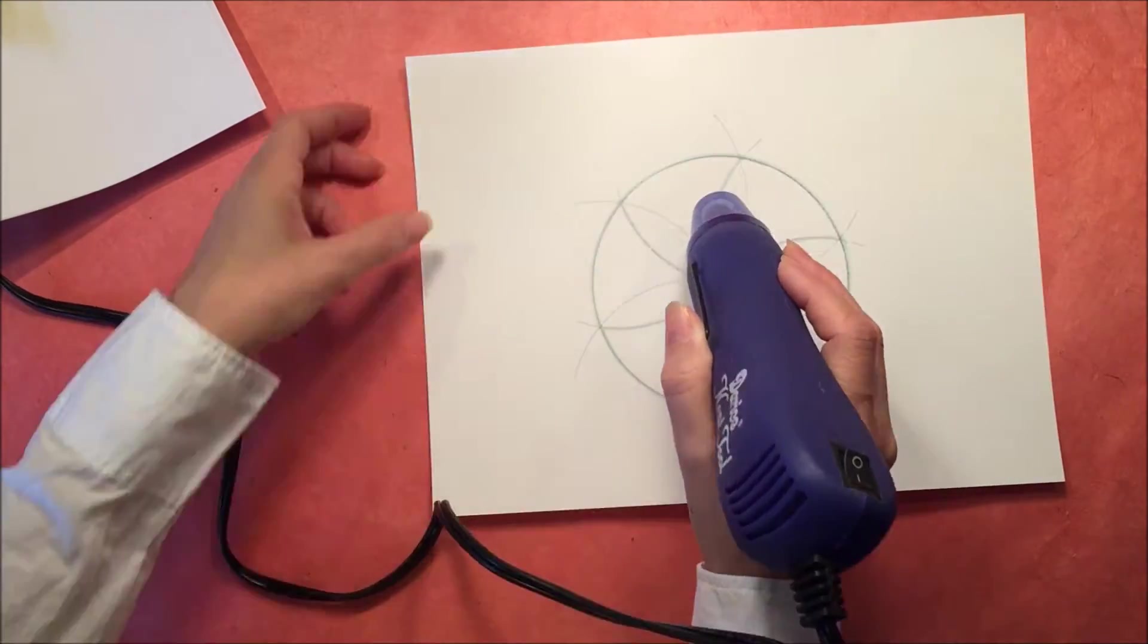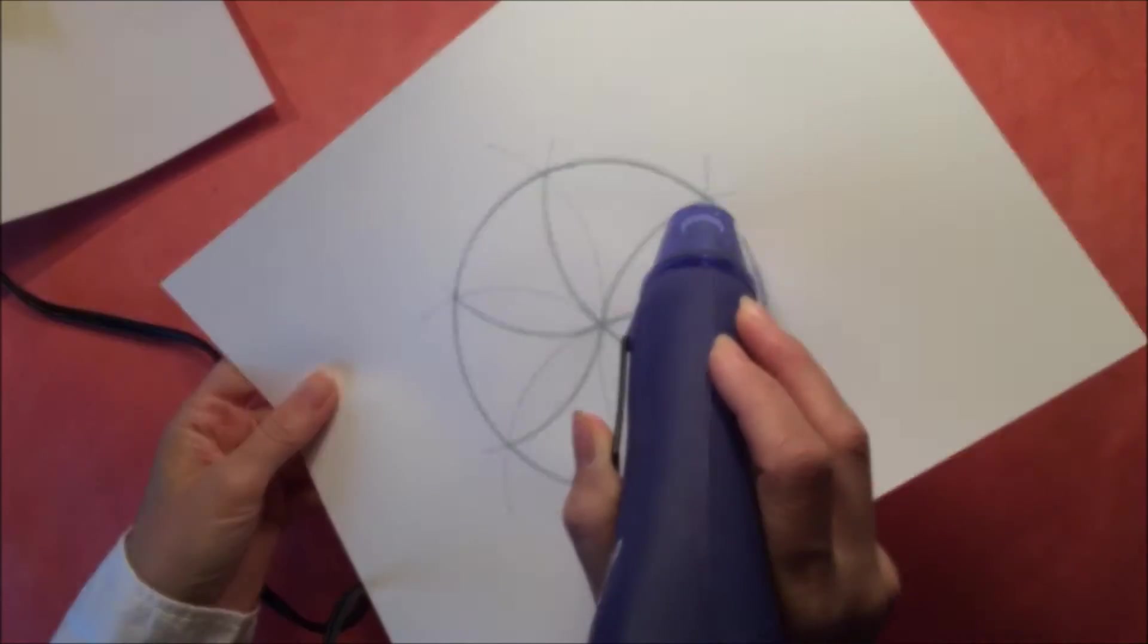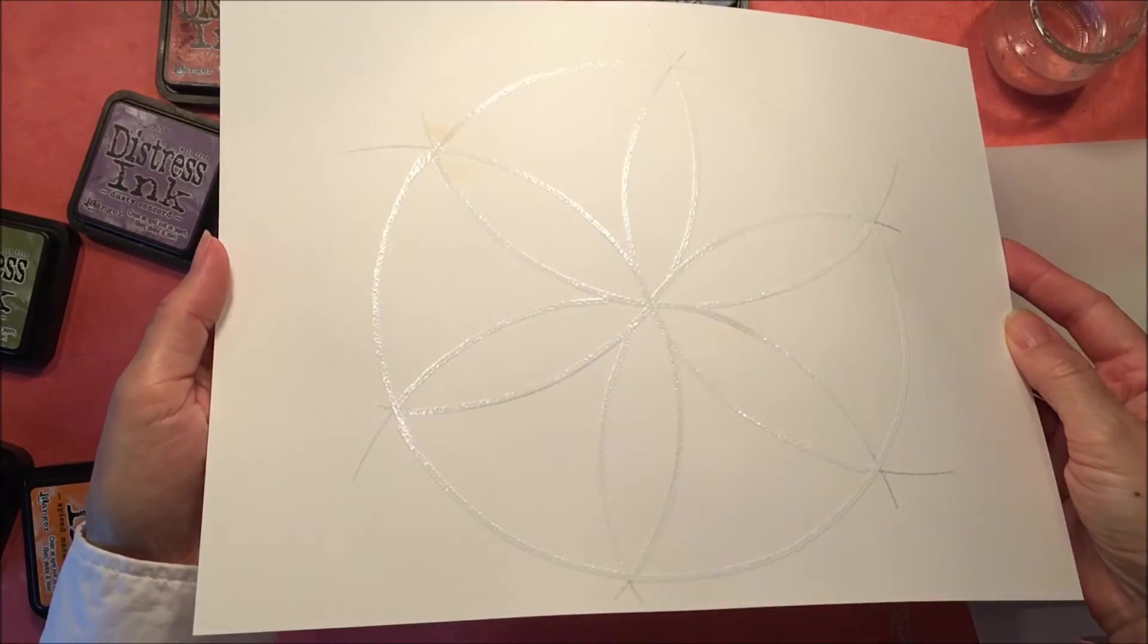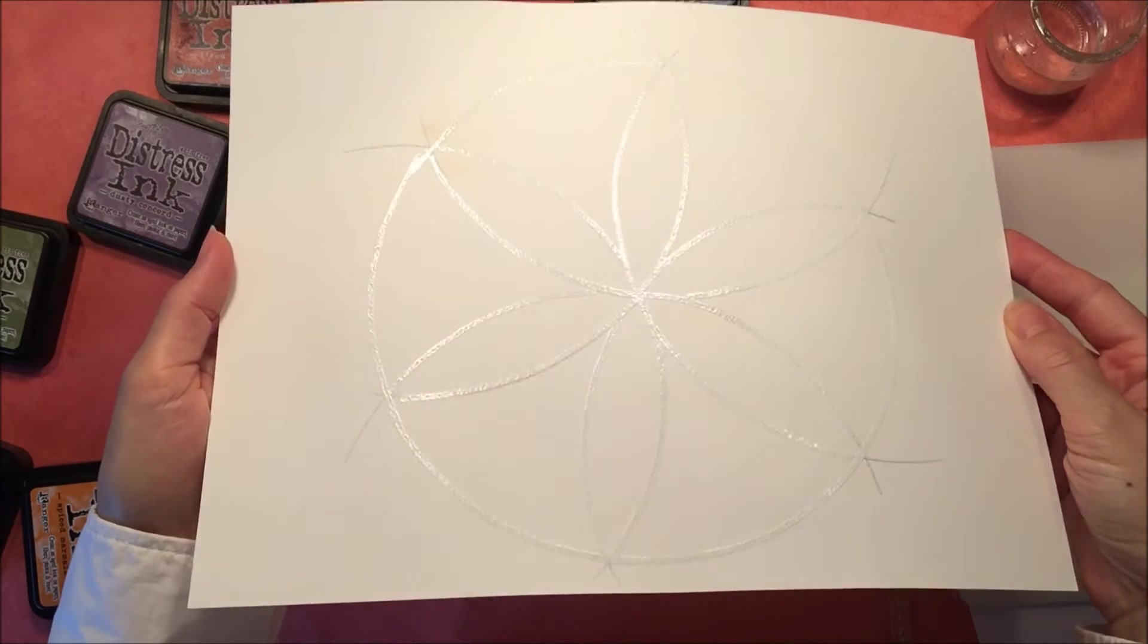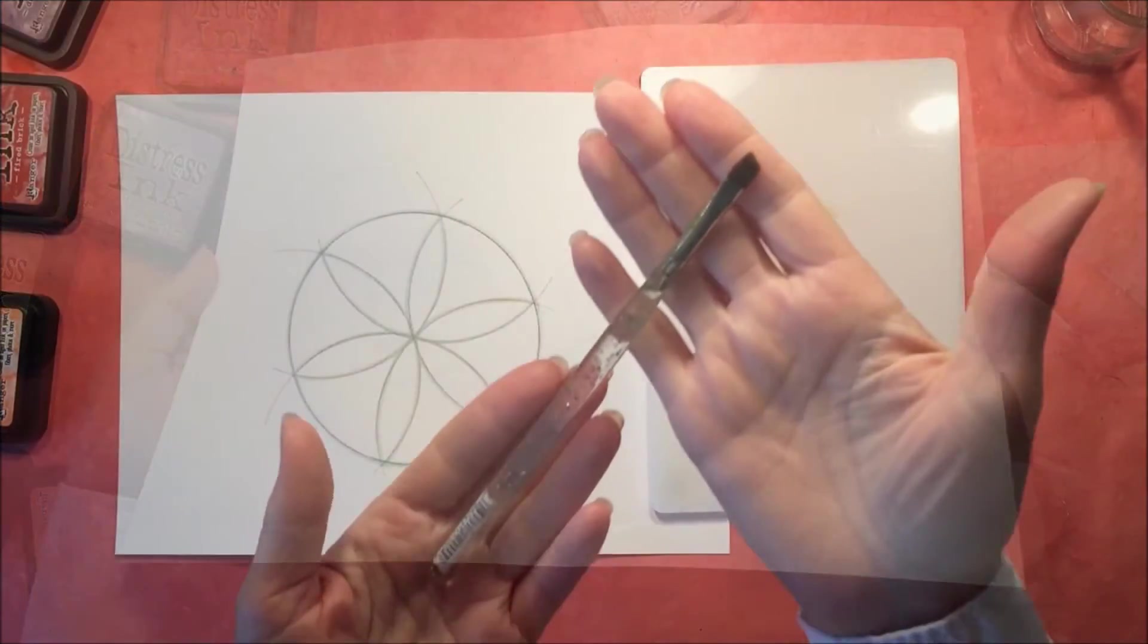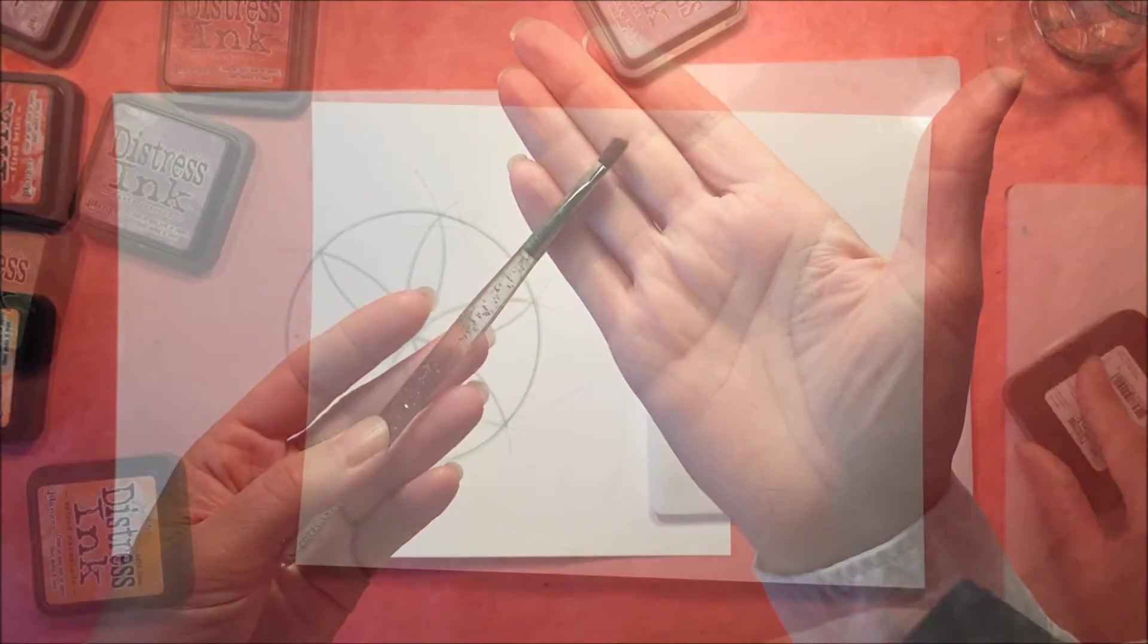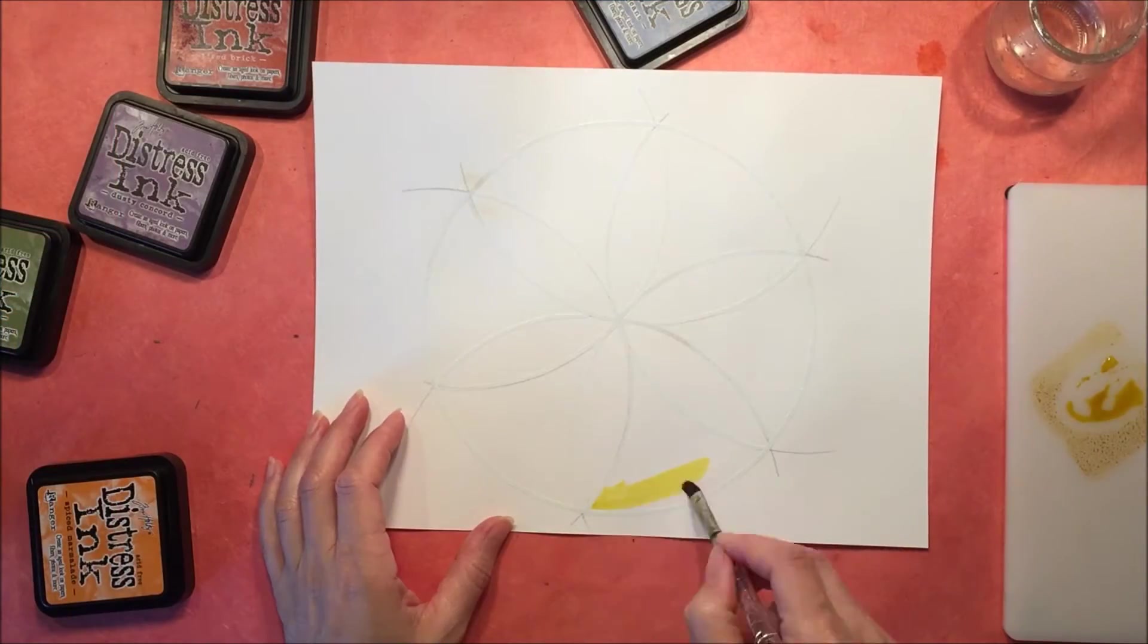This just takes a couple of minutes to get the whole thing embossed. You do want to use a heat tool and not a blow dryer for this project. This is what it looks like when it's all embossed—it leaves kind of a shiny look to it. Then I'm using a stiff bristled paintbrush that's angled so it will be easy to get into all these different corners.